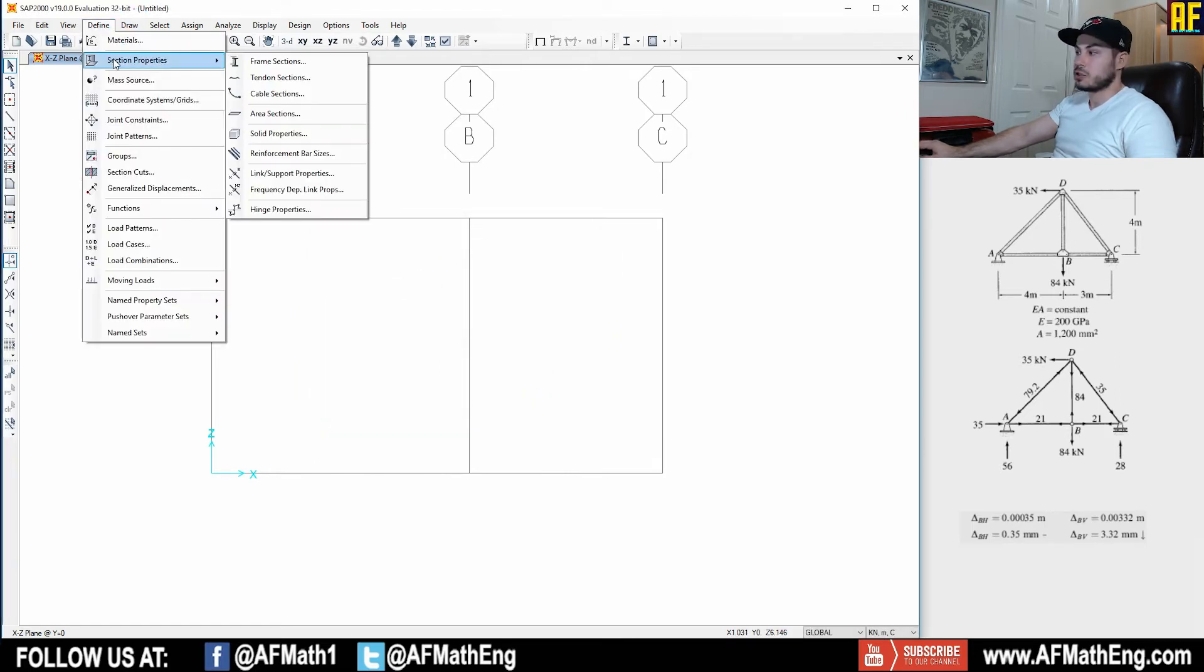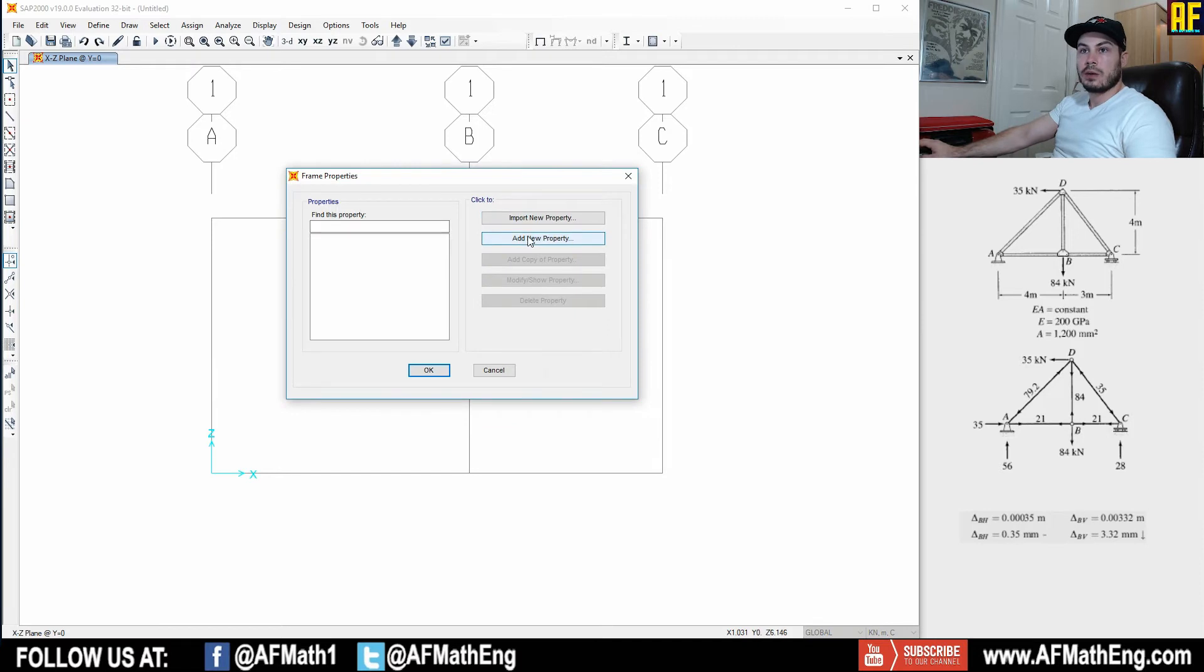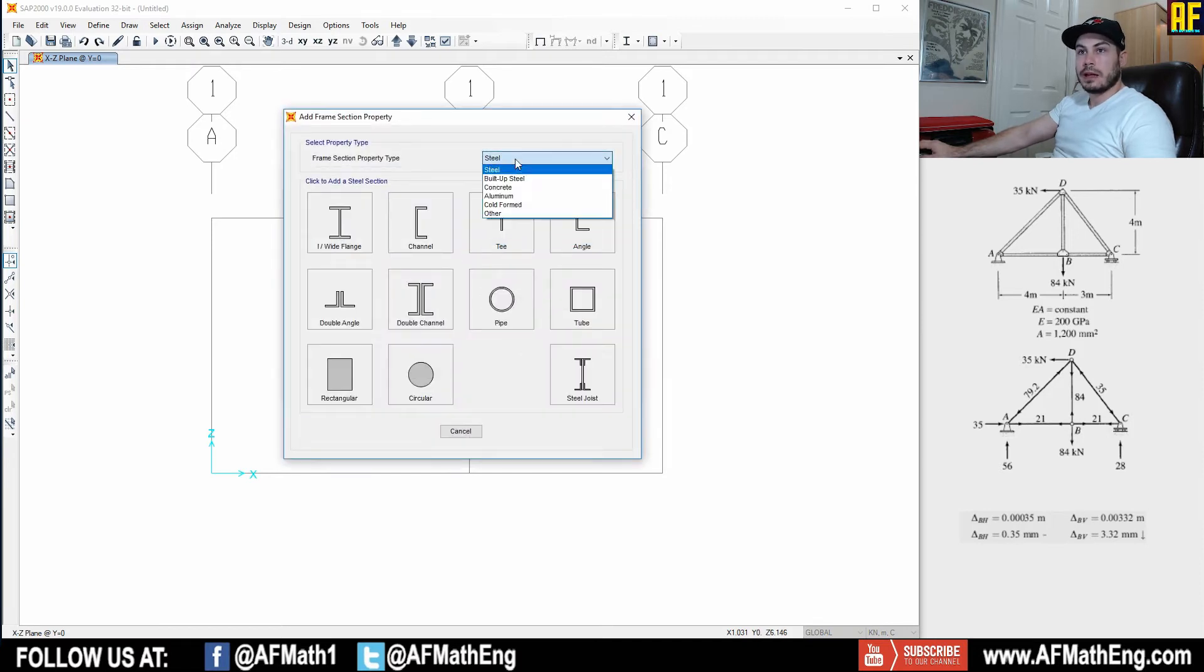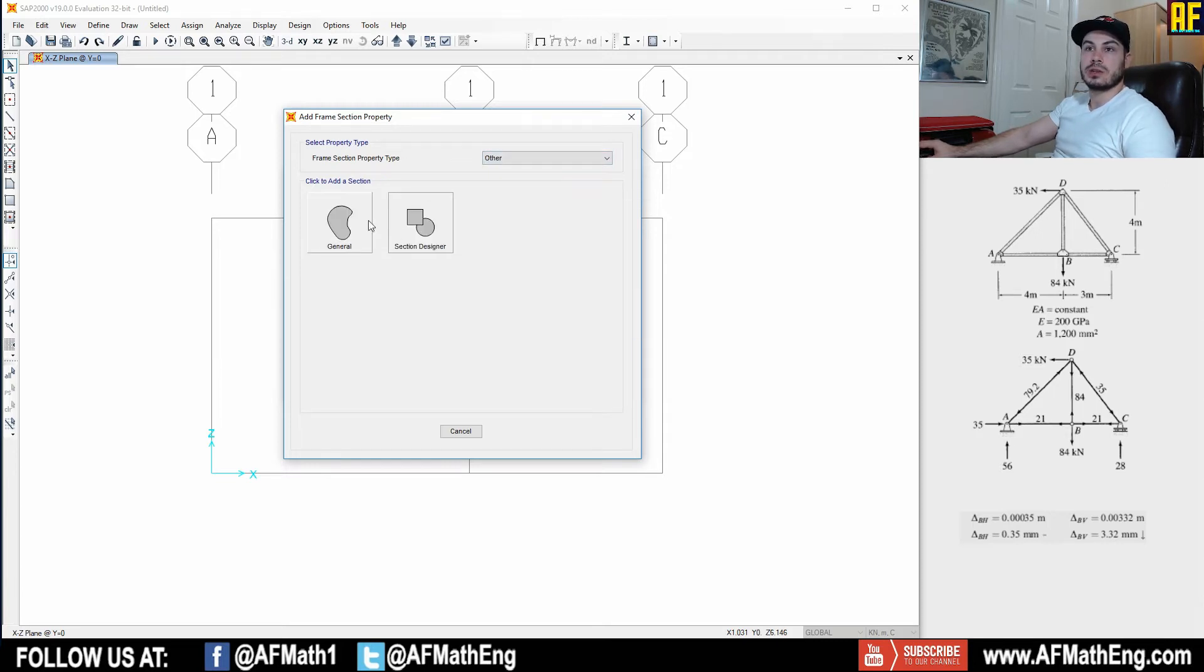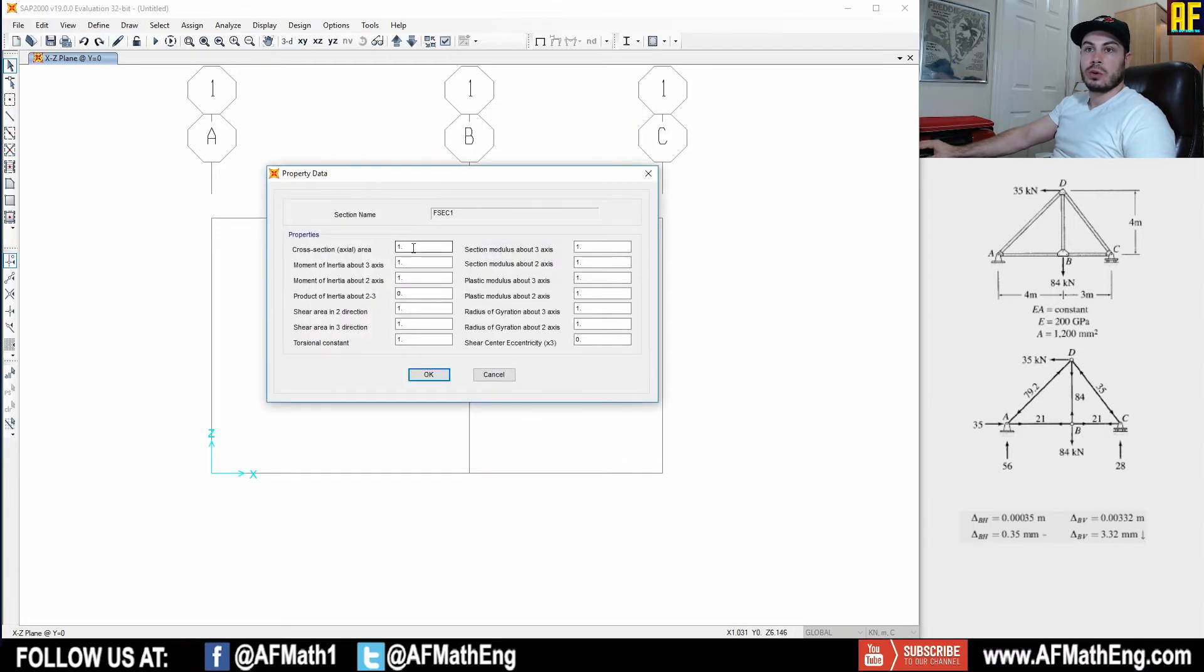Let's go over to section properties now. So we're at section properties and let's go ahead and click frame sections again. And now we're going to add a new property. And for example, if this is like a steel design course, something like that, and you're given the shape, maybe these are angles, steel angles or something, you can import them using these presets here.